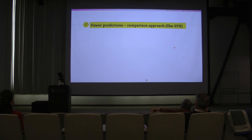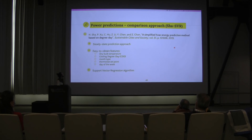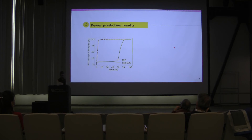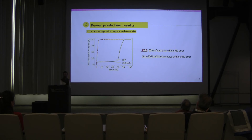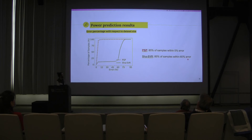We compare our work with a comparison approach that uses steady-state predictions. The error percentage with respect to dataset size shows that PSB, our algorithm, has 85% of samples within 5% error — very accurate. In contrast, the comparison approach has very poor performance, with 85% of samples within 60% error. The reason is that they use a steady-state approach, whereas we focus on a transient-state approach, so their model simply cannot keep up with the type of information it needs to predict.